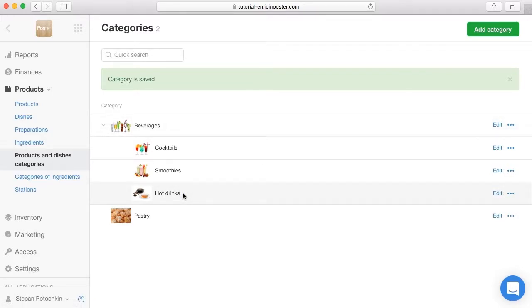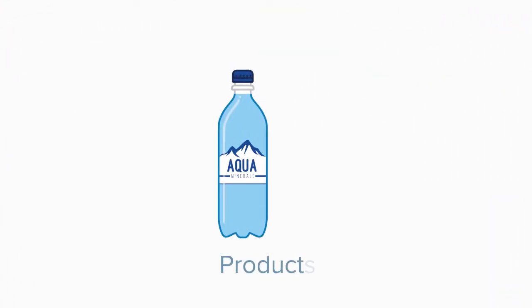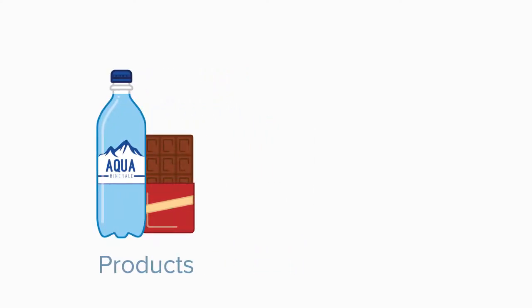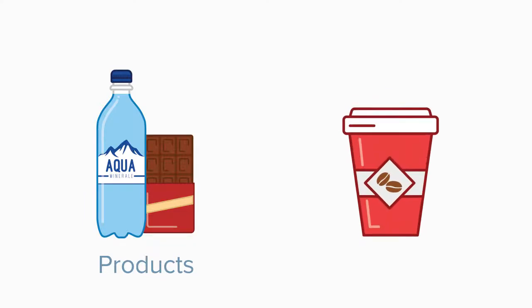With Poster, you can sell products and dishes. Products are goods that are ready for selling — for example, bottled water or chocolate. Dishes are food and drinks which are cooked in the restaurant and consist of ingredients. For example, a cappuccino consists of coffee and milk.